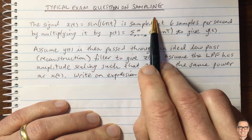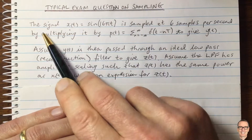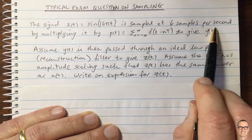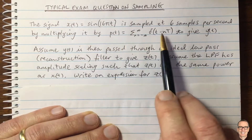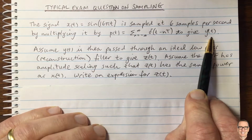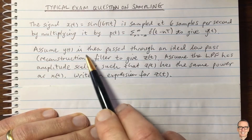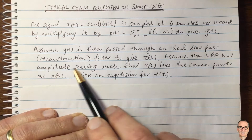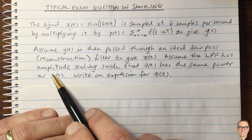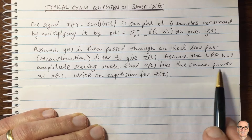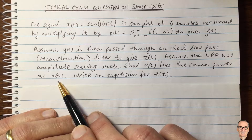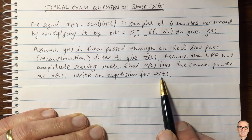Here's a typical exam question on sampling. The signal Xt, which has this form, is sampled at six samples per second by multiplying it by a train of impulse functions to give Yt — a standard sampling setup. Assume that Yt is then passed through an ideal low-pass reconstruction filter to give Zt, with amplitude scaling such that Zt has the same power as Xt, so you don't need to worry about scaling. Write an expression for Zt.